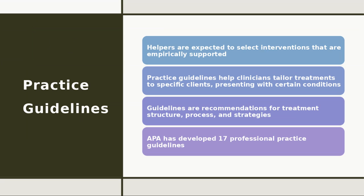Helpers are expected to select interventions that are empirically supported, so the choice of intervention should be supported by research. Practice guidelines help clinicians tailor treatments to specific clients with certain conditions — based on specifics like the client's age, gender, preferences, diagnosis, and symptoms, as well as their personal characteristics, those factors come together to help you select the appropriate treatment. Guidelines are recommendations for treatment structure, process, and strategies — they're not prescriptive or mandating what you must do. At the time our book was published, APA had developed 17 professional practice guidelines, and you're always welcome to go to the APA website to check those out.